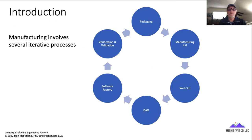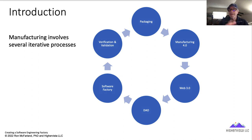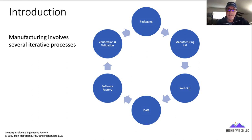We've got this cyclical process: manufacturing, Web3, DAO, software factory, verification, validation, packaging. It's an iterative circle. How you build this out is really something on your own. If you're doing a research project or if you're in an organization thinking about this as a concept, drop me a note — I'll be glad to help you find some good research.